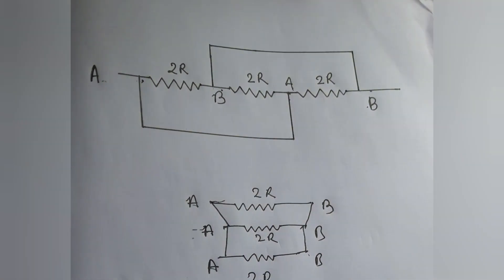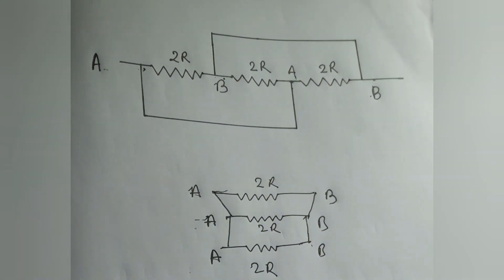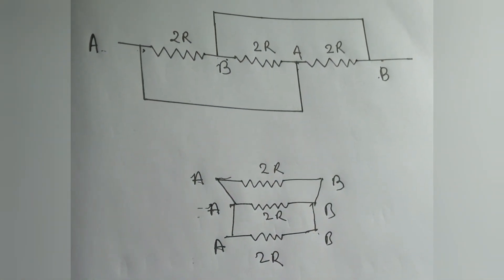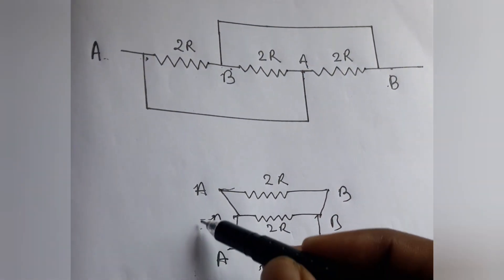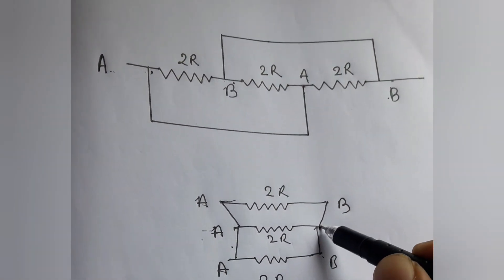Now we see that these three resistances are connected in parallel. This is the common point A and that is the common point B.